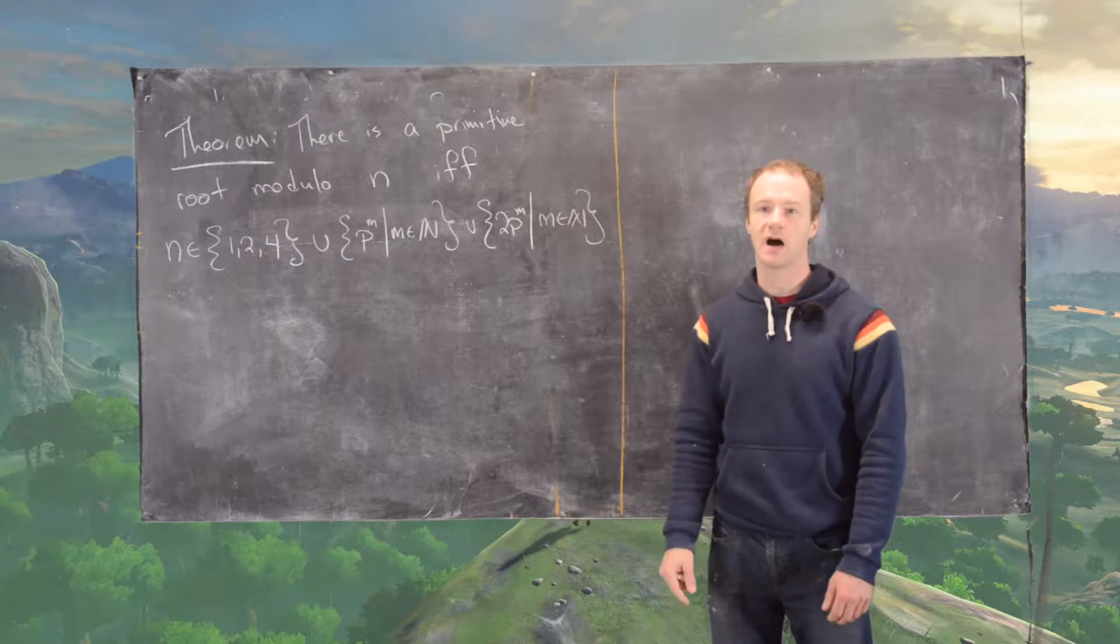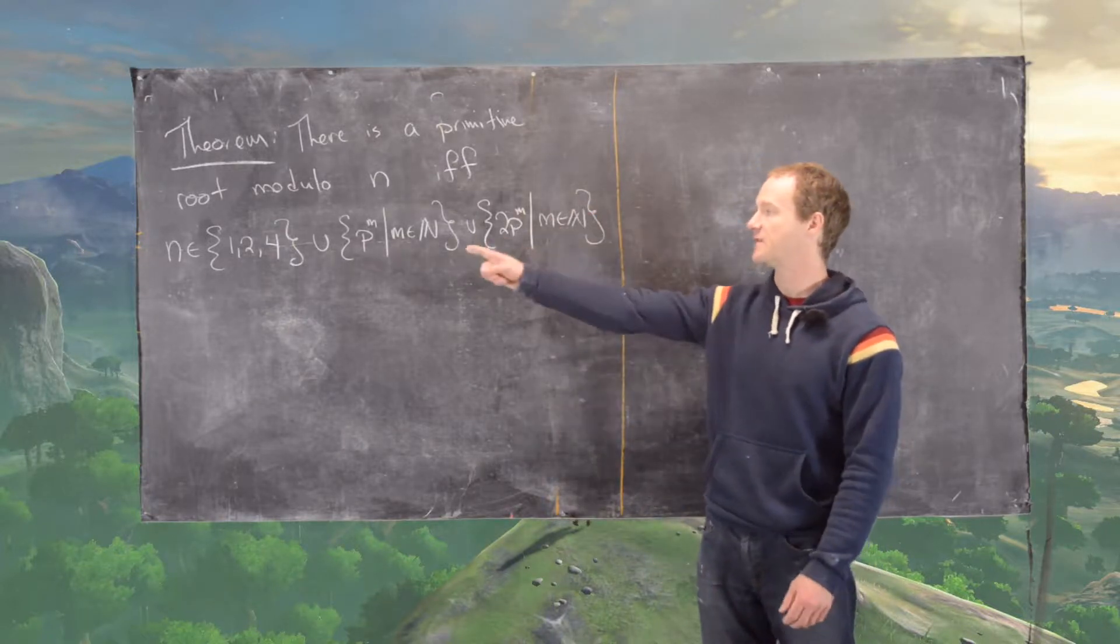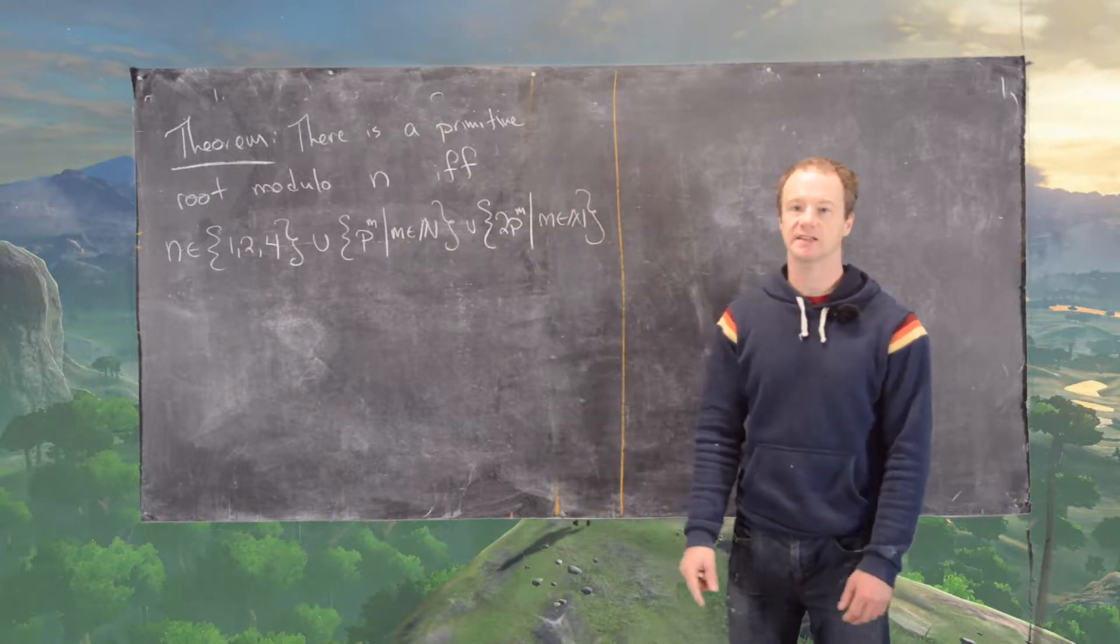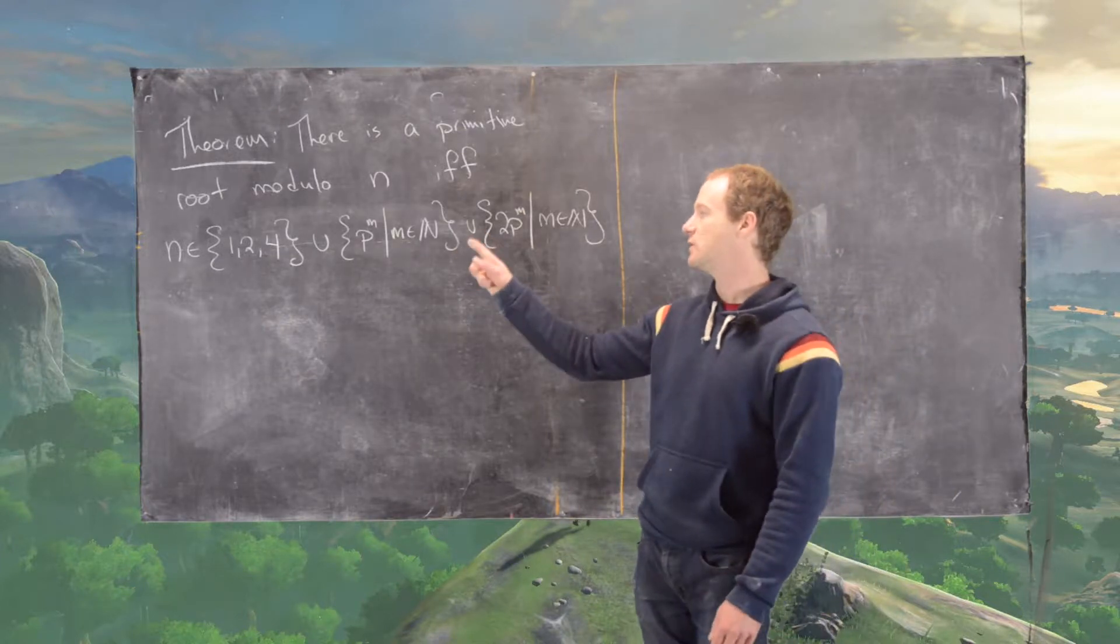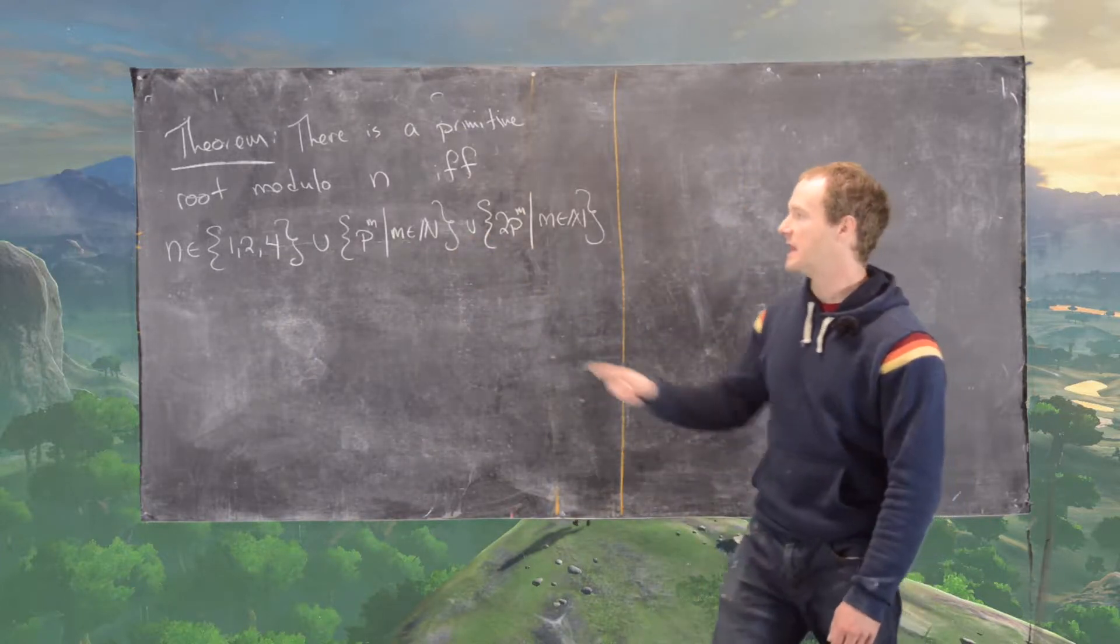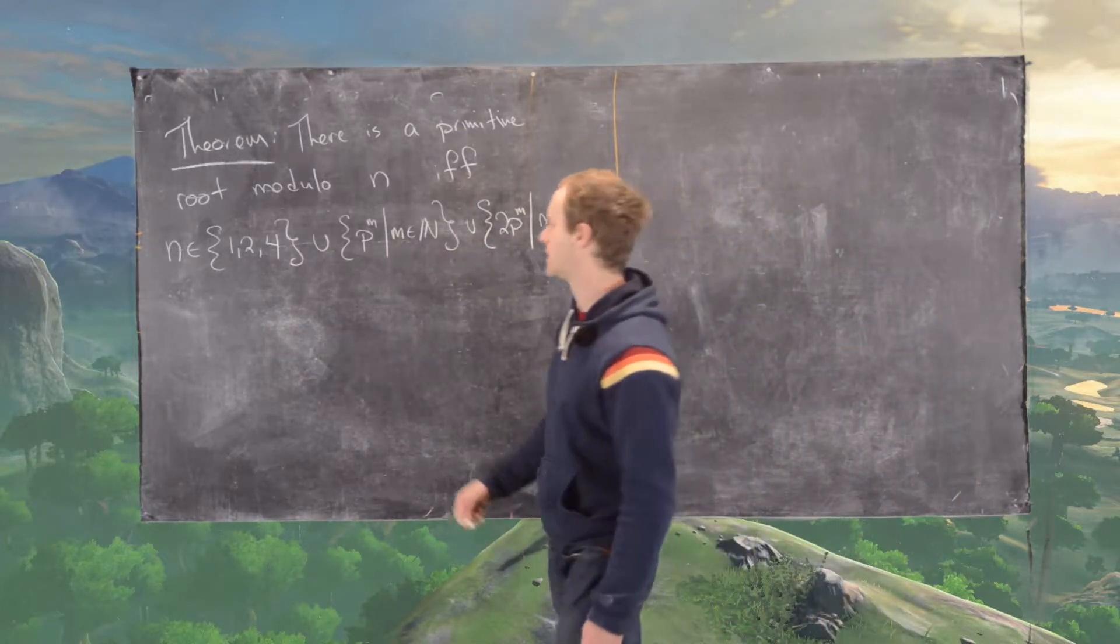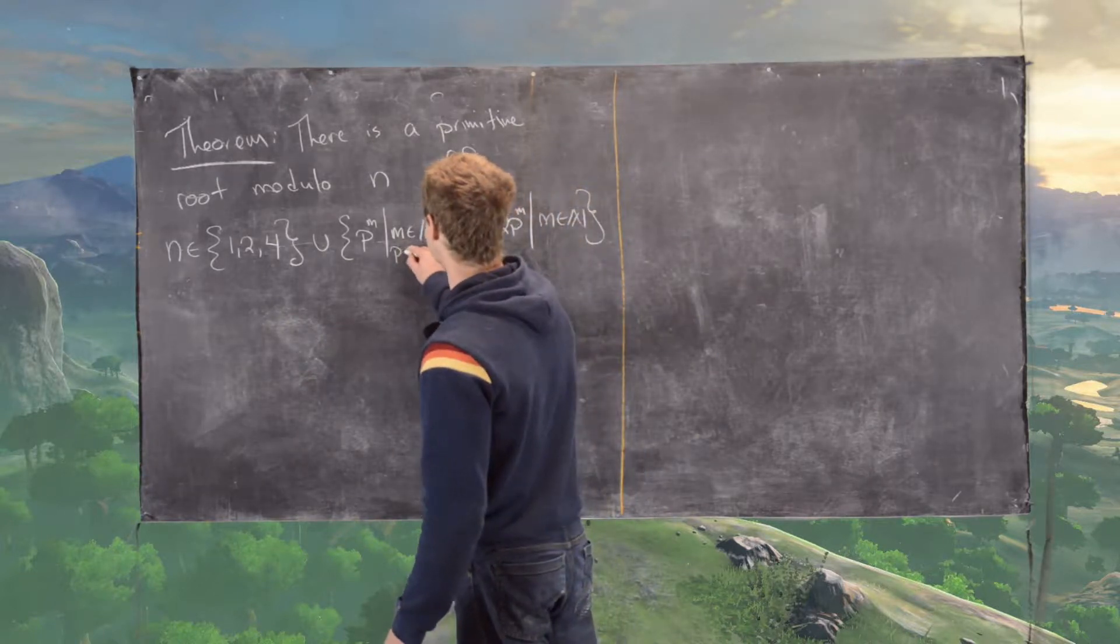So there is a primitive root modulo n if and only if n is in one of these sets: it's 1, 2, 4, or it's a power of a prime where p is odd,